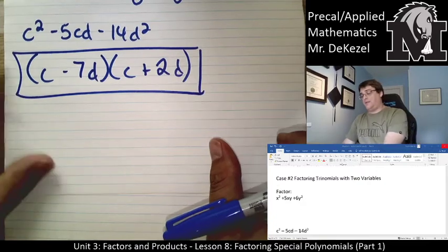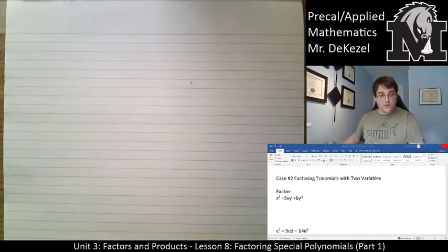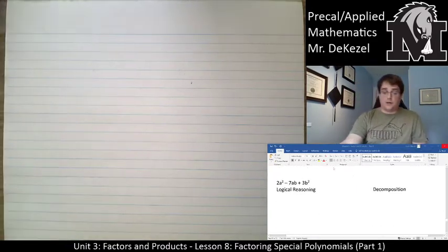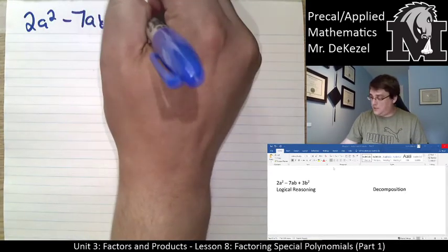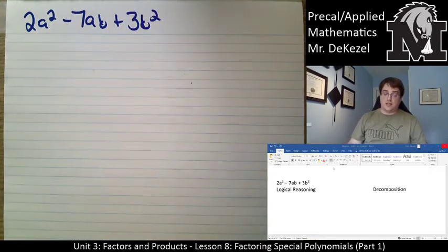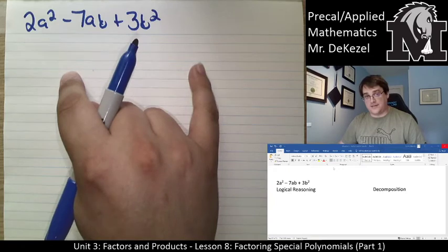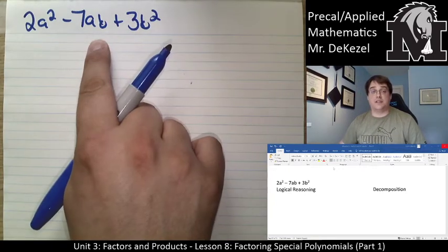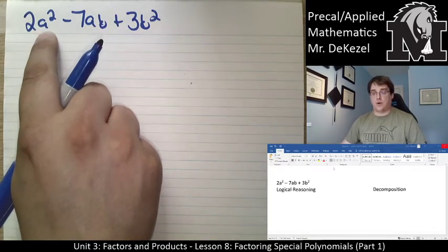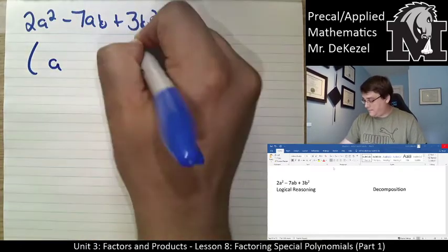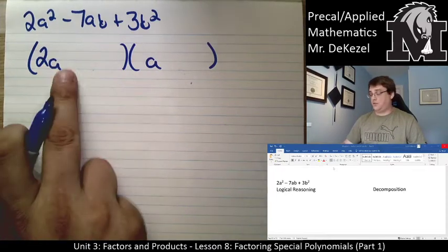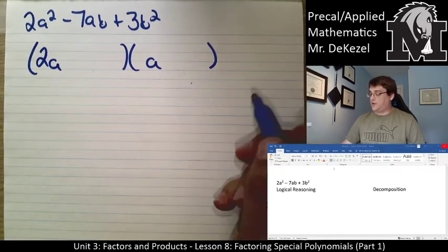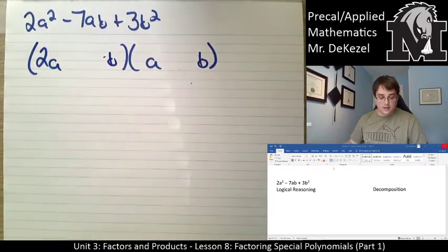When we do have a coefficient in front, like in 2a squared minus 7ab plus 3b squared, we can use logical reasoning and decomposition just like before. The only difference is we're writing a and b at the ends of the binomials. To make 2a squared we need 2a times a, and the only combination for 2 is 2 and 1. We also need b at the back of each bracket to eventually make the b squared term.